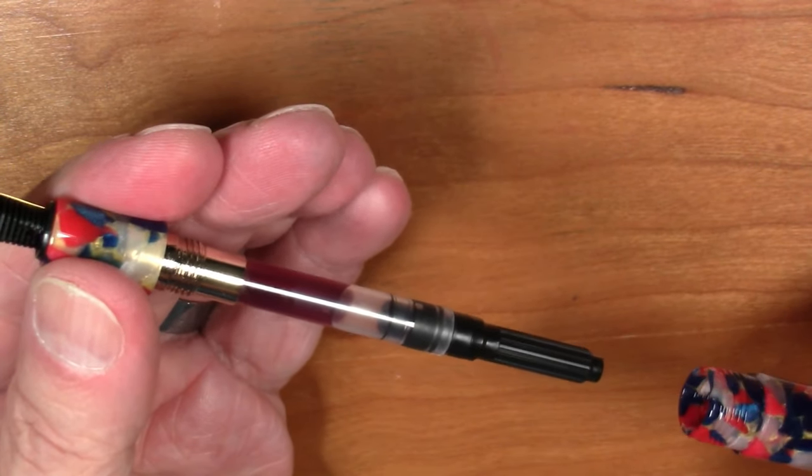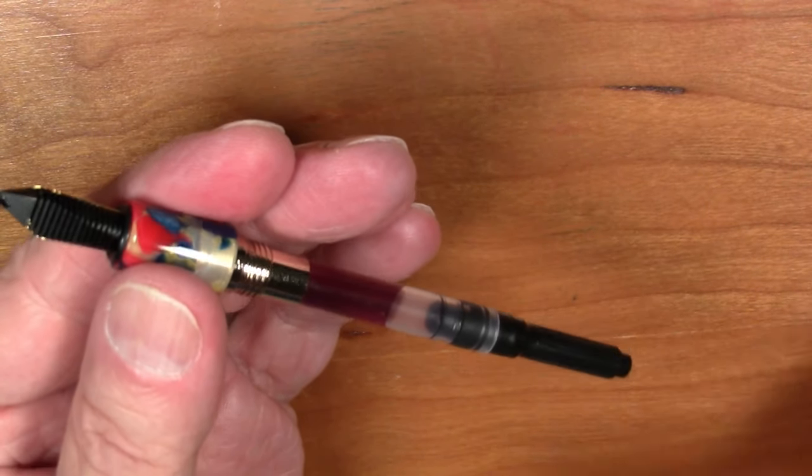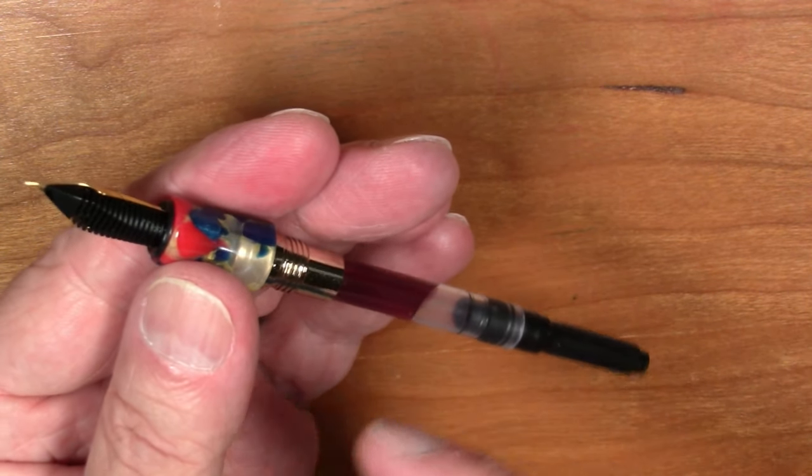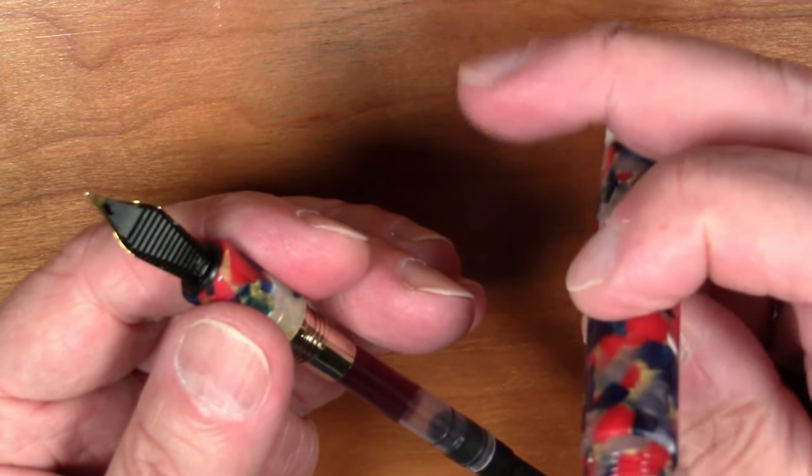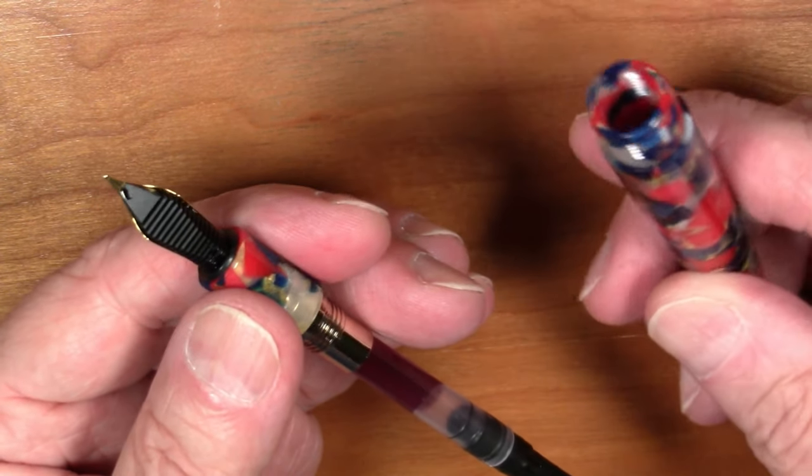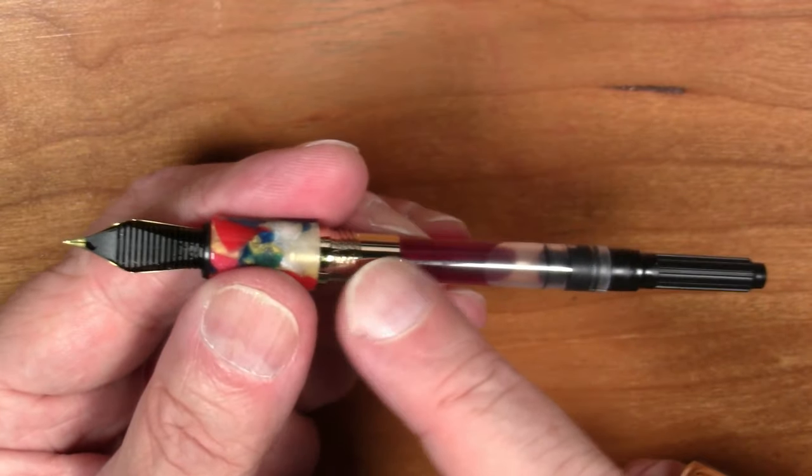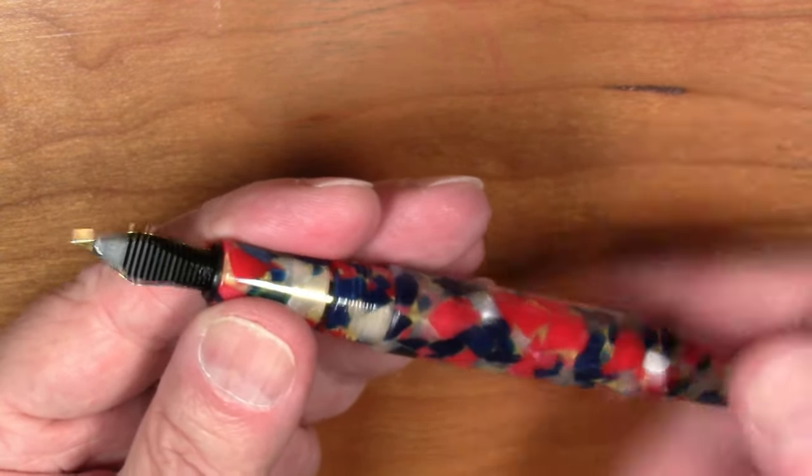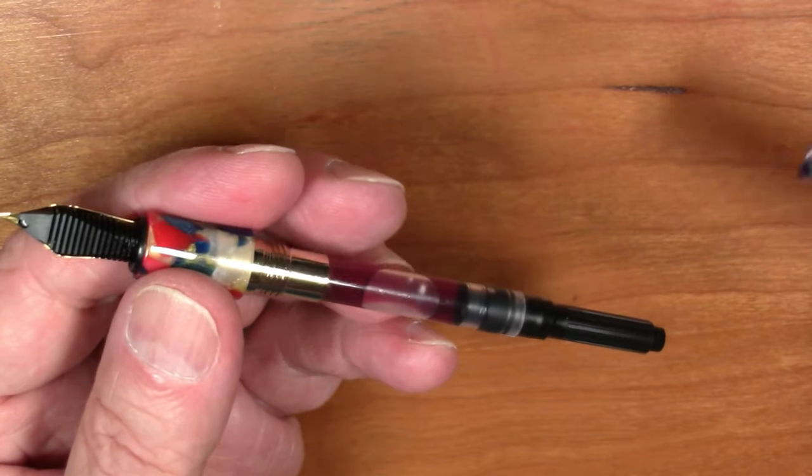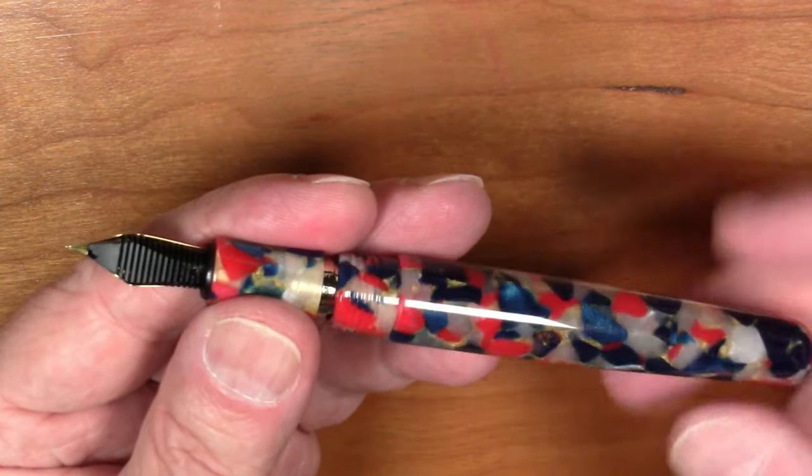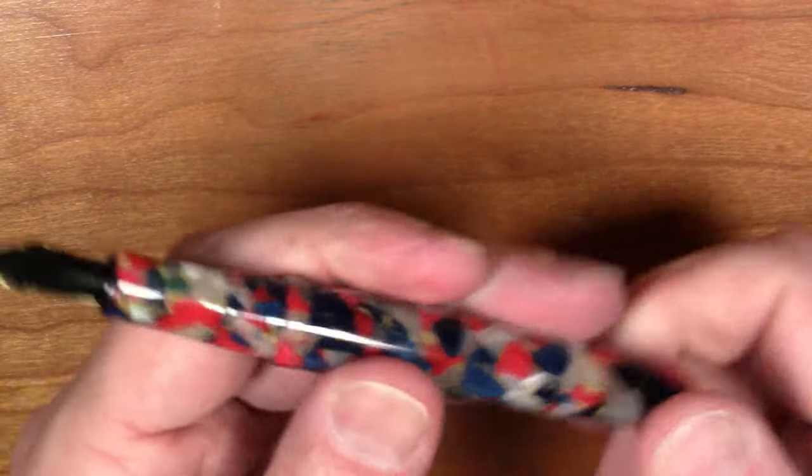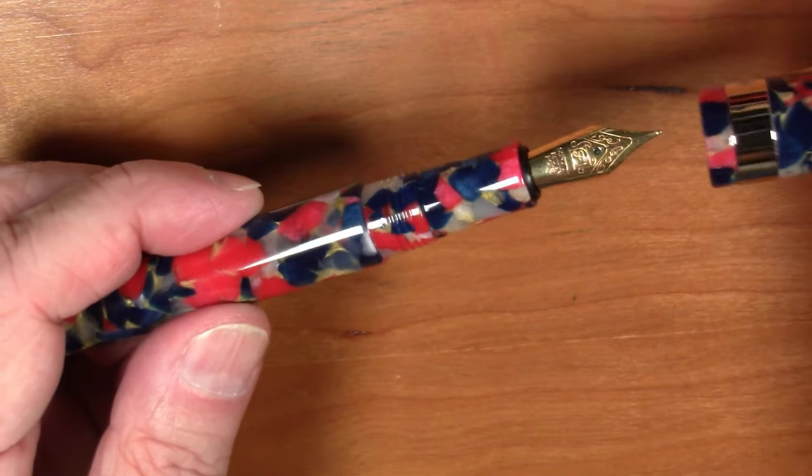It is a cartridge converter filled pen. It does come with the converter, but no eyedropper in here. We've got nothing metal in the barrel as best that I could tell. However, you do have metal here. It's a little bit of a shame. This actually might not make it a terribly bad pen to eyedropper. But I'm not going to complain at all.